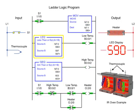With source A less than source B of the less than or equal to instruction, the low temp and heater outputs are enabled. The heater remains on as long as the low temp output is true and the high temp output is false.